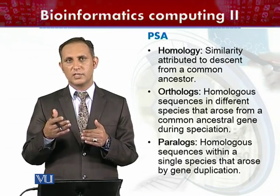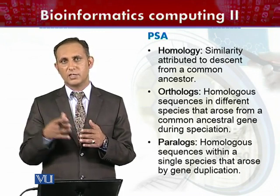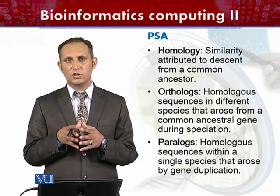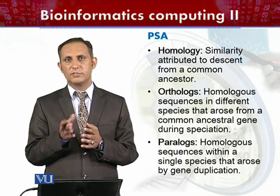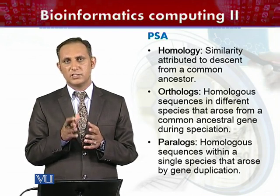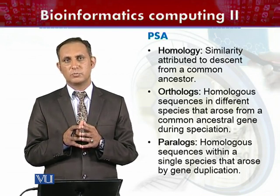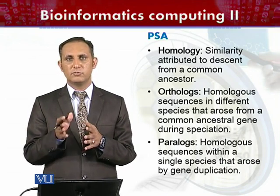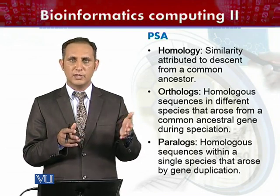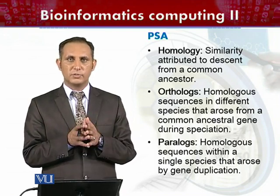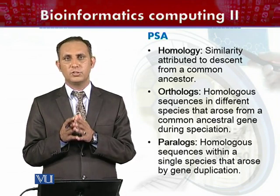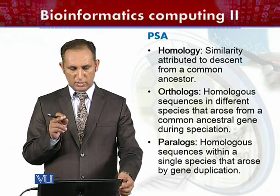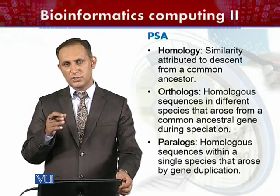Orthologs are homologous sequences found in different species, and they arise due to the process of speciation. For example, the gene P53 is present in humans and P53 is also present in monkeys. The human P53 and the monkey P53 are orthologs of each other, because their similarity is due to a speciation event from a common ancestor.